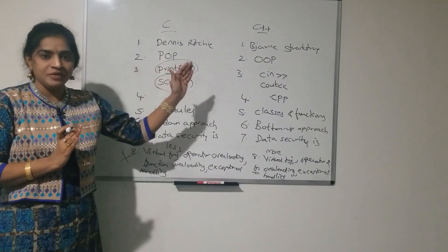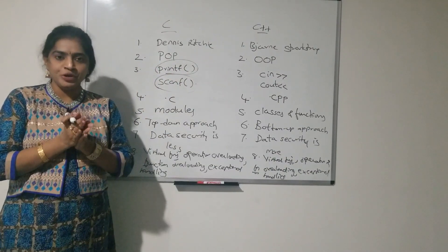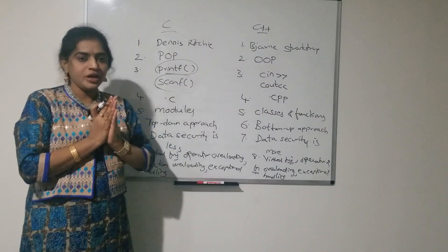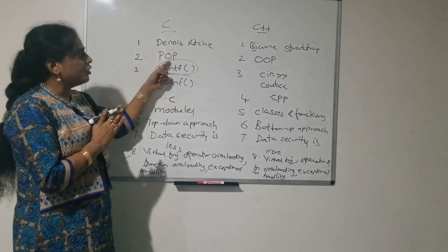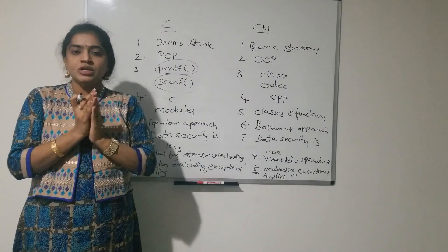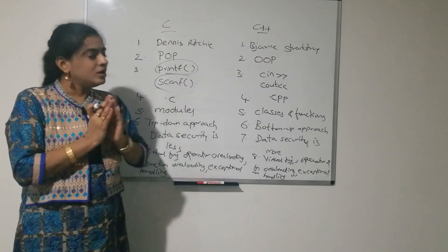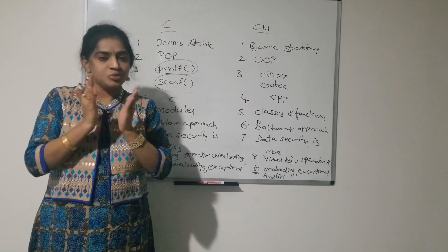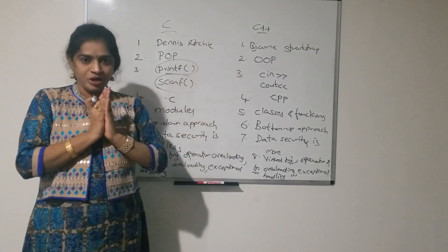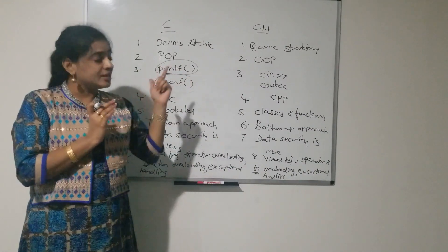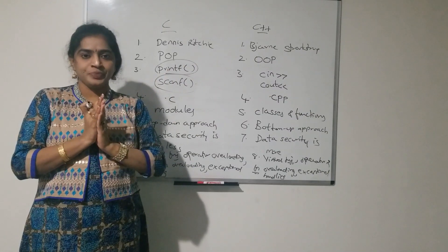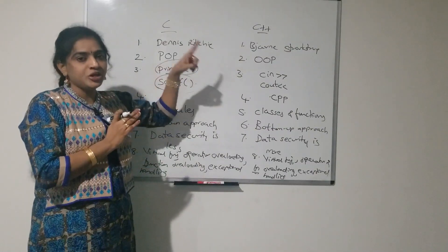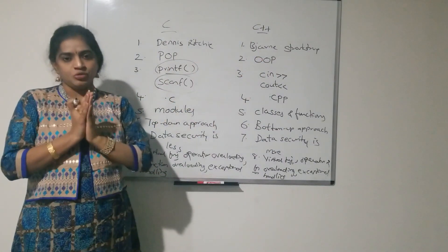These are the main differences between C and C++. Once again: C was introduced by Dennis Ritchie and C++ was introduced by Bjarne Stroustrup. C is a procedure oriented programming language — procedures are nothing but functions, so C is completely dependent on functions. C++ is an object oriented programming language, meaning it depends upon objects. Even though C++ is object oriented, it also supports procedure oriented programming because C++ is derived from C.